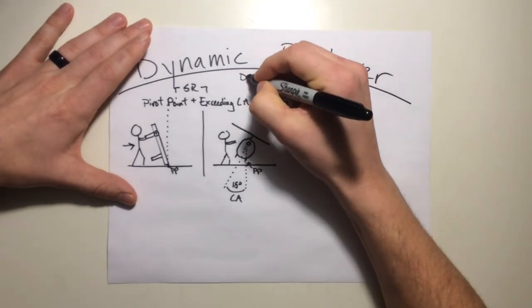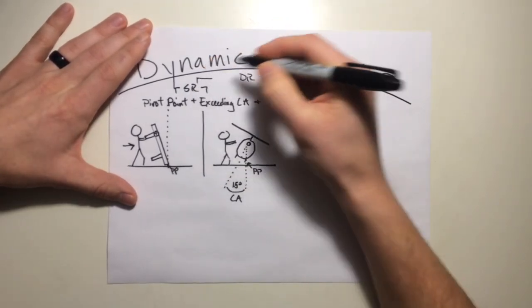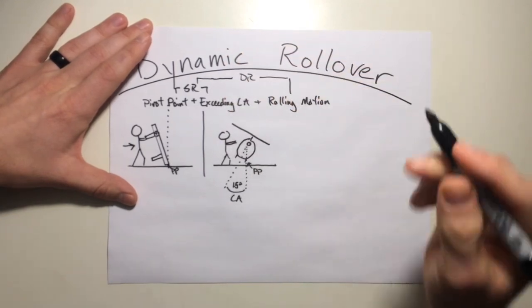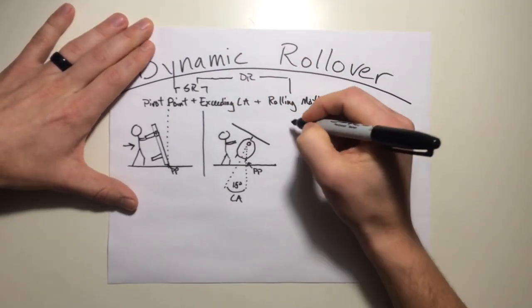And now dynamic rollover is going to cover the pivot point exceeding the critical angle, but now introduces a rolling motion. So what does that look like?